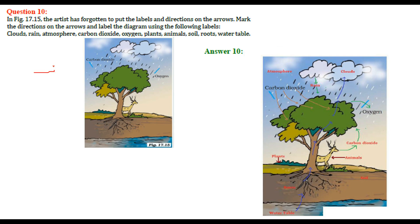In this figure, the artist has to put some labels. We have to mark: cloud, rain, atmosphere, carbon dioxide, oxygen, plants, animals, soil, roots, and water table. This is the atmosphere, these are the rain coming down. This is carbon dioxide — because oxygen is delivered by the tree and plants and carbon dioxide is taken in. While the deer is intaking oxygen and releasing carbon dioxide. These are the plants, roots, soil, and this is the water table.